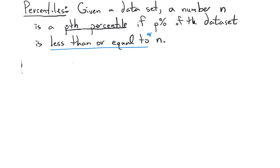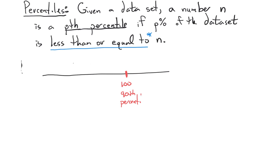Let me give you a little example. Suppose we had a data set and the 90th percentile is 100. That tells me that 90% of the ordered data is less than 100, and of course 10% is above 100.